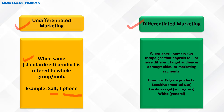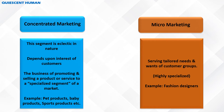When it comes to differentiated marketing, a company creates campaigns that appeal to two or more different target audiences or market segments. It means the company has divided the market into different segments. For example, Colgate offers sensitive toothpaste for medical reasons, gel toothpaste for youngsters, and their general white toothpaste for most adult or aged audiences. This segmentation is called differentiated marketing.